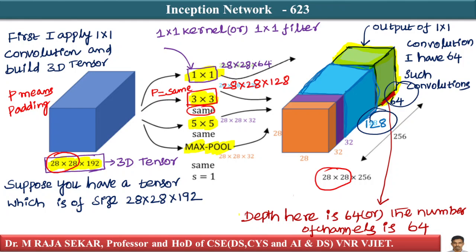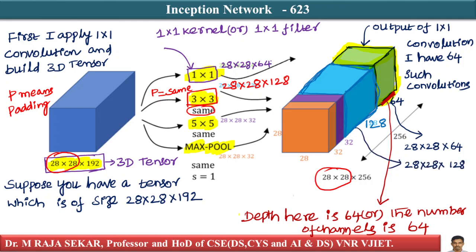I can stack one on top of the other — the first 3D tensor is 28x28x64, the second is 28x28x128. Since their length and width are the same (28x28) and only the depth is changing, I can stack them on top of each other. The whole green region is the output of 1x1 convolution and the whole blue region is the output of 3x3 convolution.